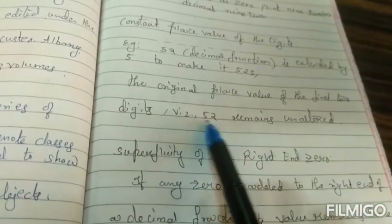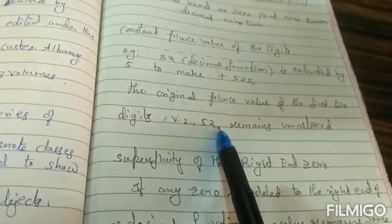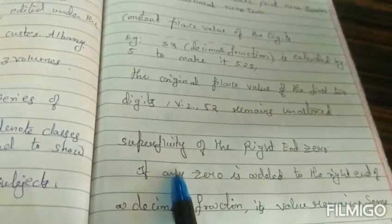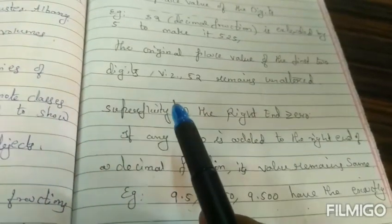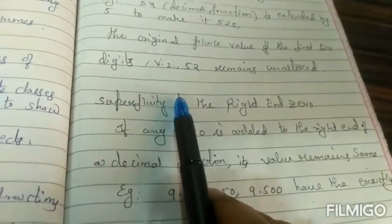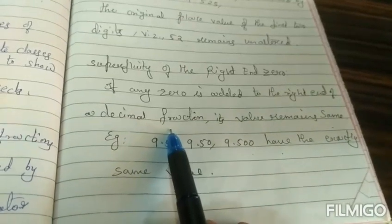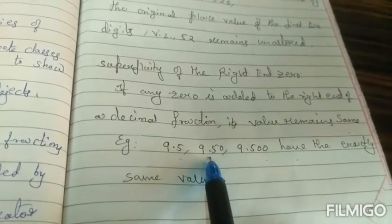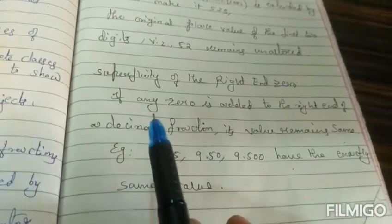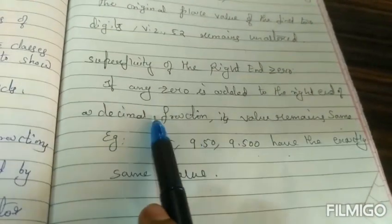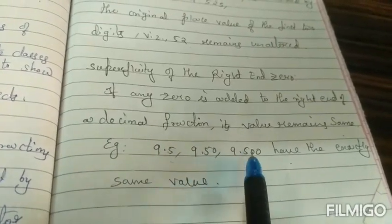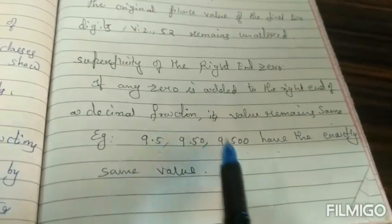So these original place values will never change and the superfluity of the right hand zero: whenever we add any zeros at the right hand side, will it make any difference? No, the two main digit numbers before this decimal fraction will remain exactly the same however many zeros you add. For example, you can see one zero I'm adding here and the other value will be 9.5 itself.